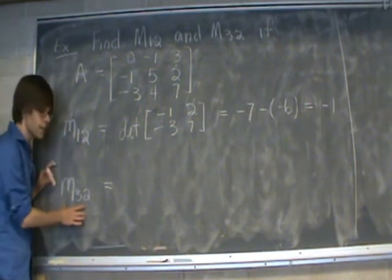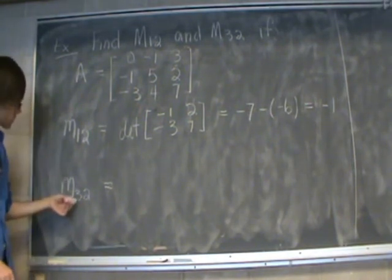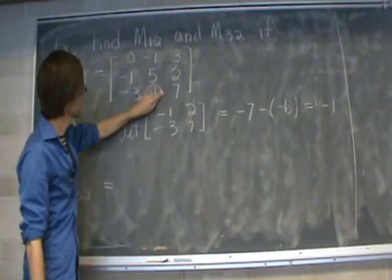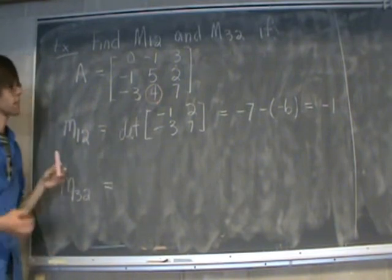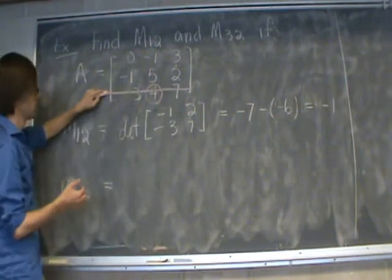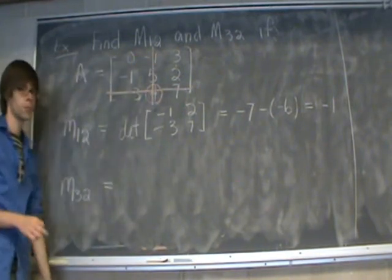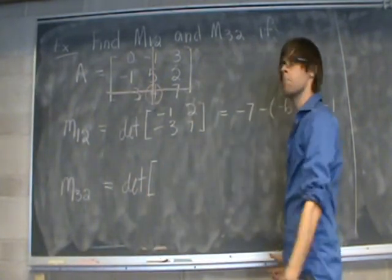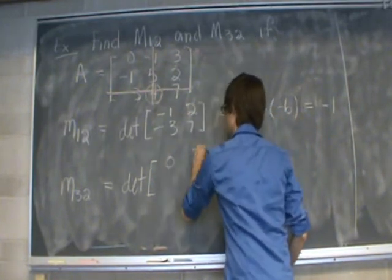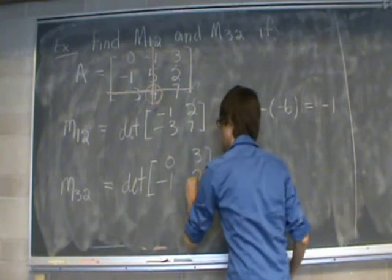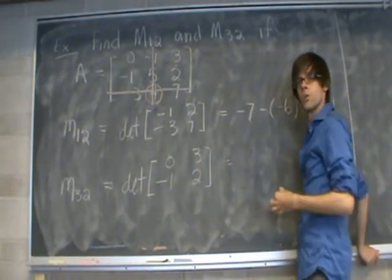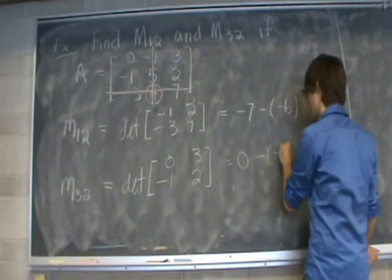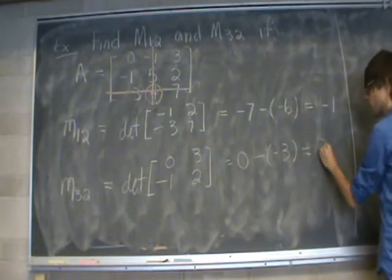Next, let's calculate the minor M3,2. We look at row 3, column 2, which is the entry 4. We delete all information in row 3 and column 2. The numbers left over are 0, 0, 3, −1, and 2. Using the 2x2 weave method: our first number is 0 and we subtract −3, so this minor is equal to 3.